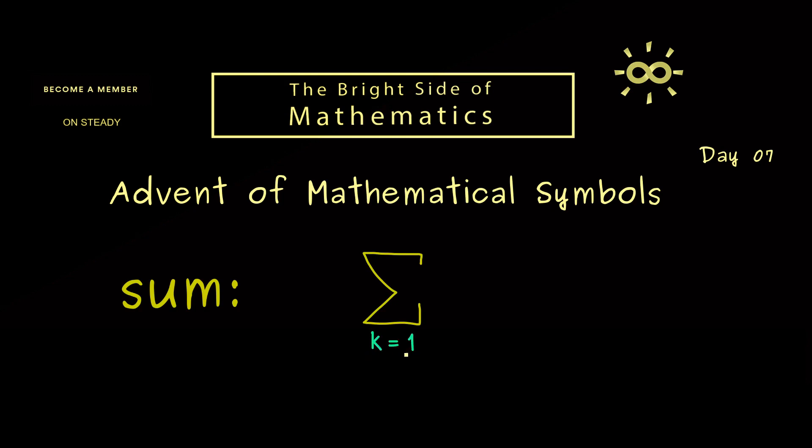And if you see k is equal to 1, this means 1 is the starting value for the variable k. On the other hand on the top of sigma you find the end value for the variable k.